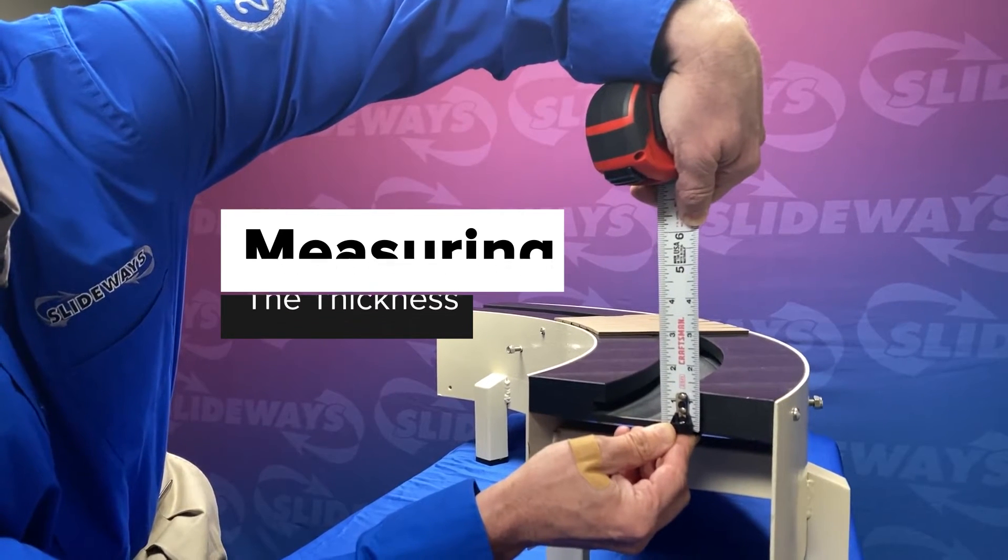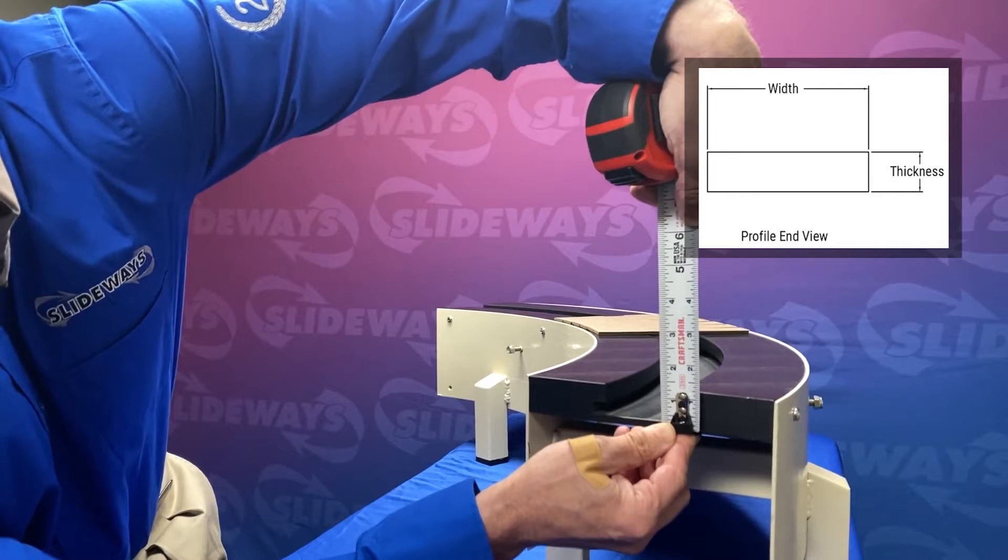Measuring the thickness: to measure the thickness of the track, take a tape measure and measure from the bottom to the top of the track.